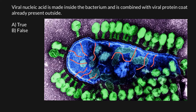All the bacteriophages that we see outside this bacteria are empty — we call them ghosts. When new bacteriophages are assembled inside the bacteria, special proteins would be produced that would lyse the cell wall, and bacteriophages can escape outside and infect more bacteria.